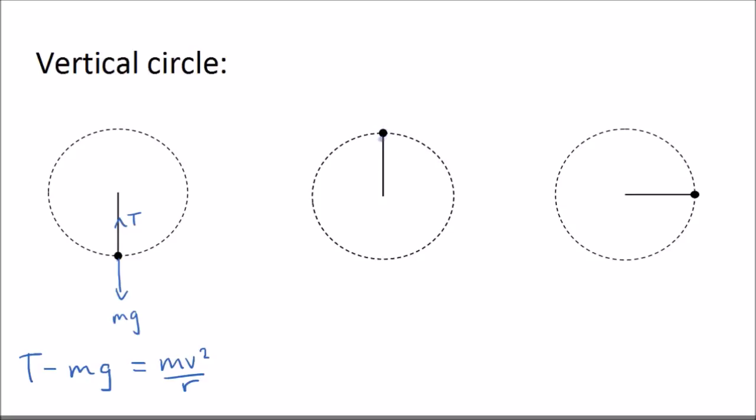If the mass is at the top of the circle now both the tension T and also the weight mg are acting downwards. So they both provide the centripetal force. And it means that the tension must decrease from what it was before. So at the top our equation will look like this. So T and mg are both providing our centripetal force.